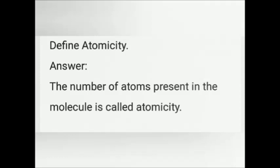Define atomicity. The number of atoms present in a molecule is called atomicity. For example, CO₂ has one carbon and two oxygen atoms — there are three atoms present in carbon dioxide. So the atomicity of CO₂ is 3.